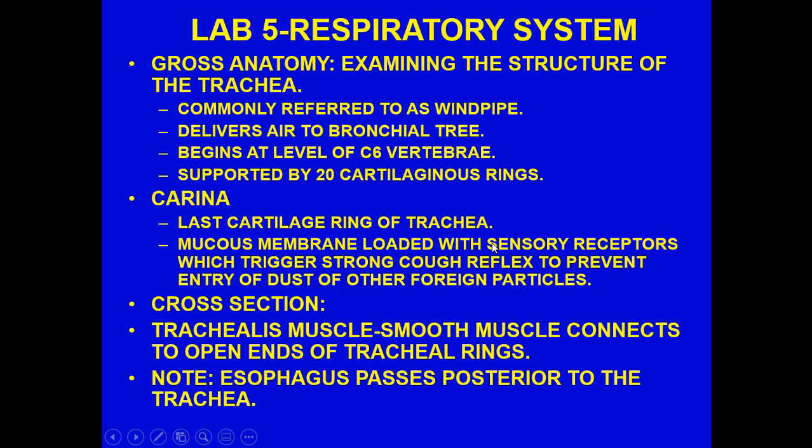The trachea, commonly called the windpipe, delivers air to the bronchial tree. It begins at roughly the level of the C6 vertebra and is supported by 20 cartilaginous rings. The last cartilage ring is called the carina, a mucous membrane structure loaded with sensory receptors that trigger a strong cough reflex to prevent entry of dust or foreign particles. Interestingly, bitter taste receptors similar to those on the tongue have been found in this region and also trigger cough reflexes.